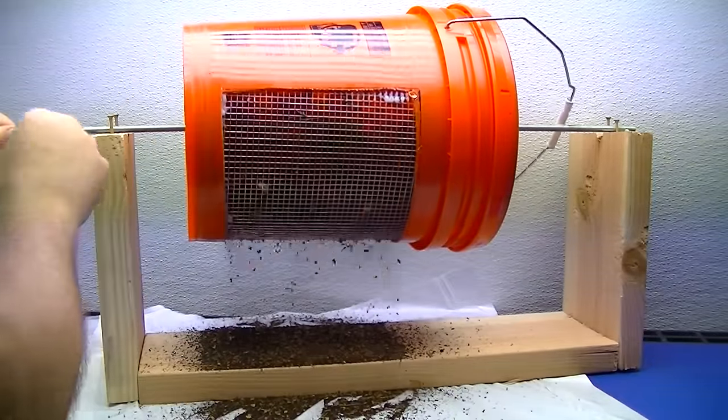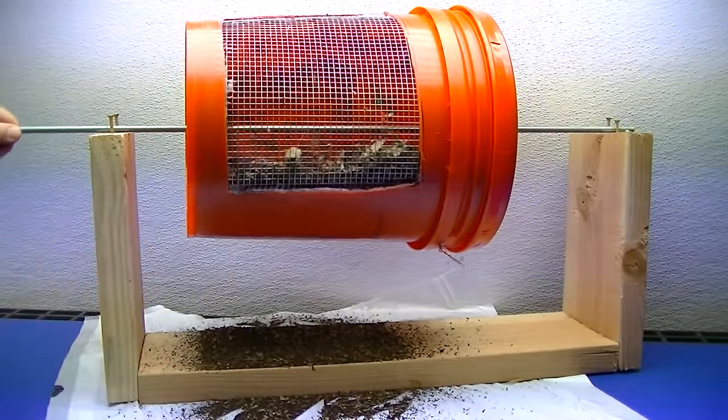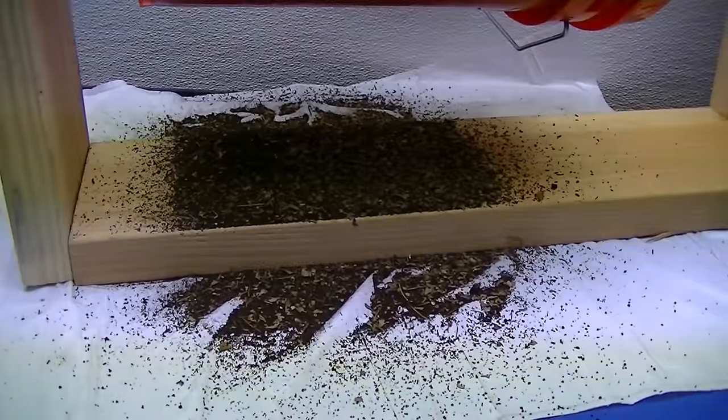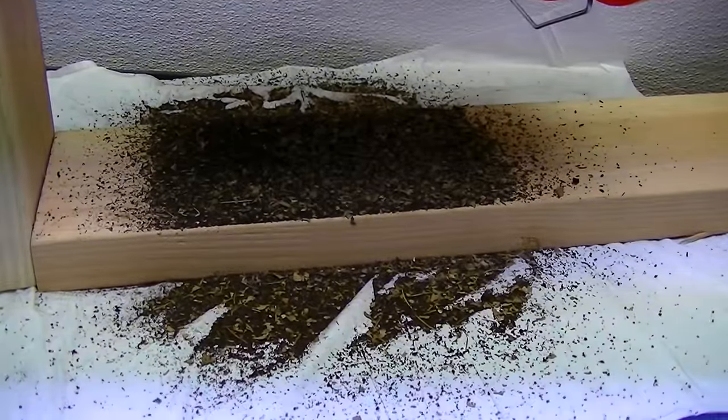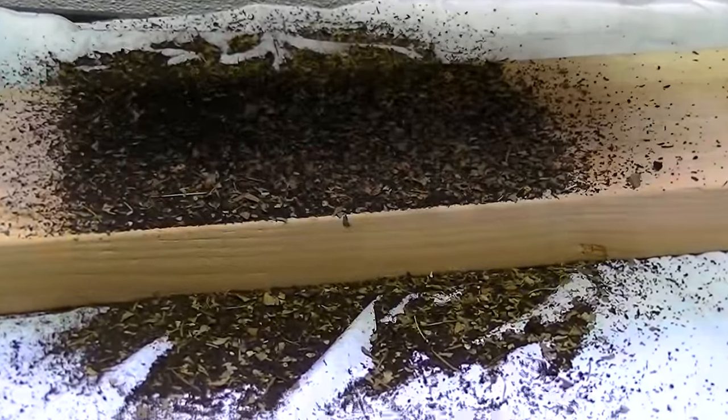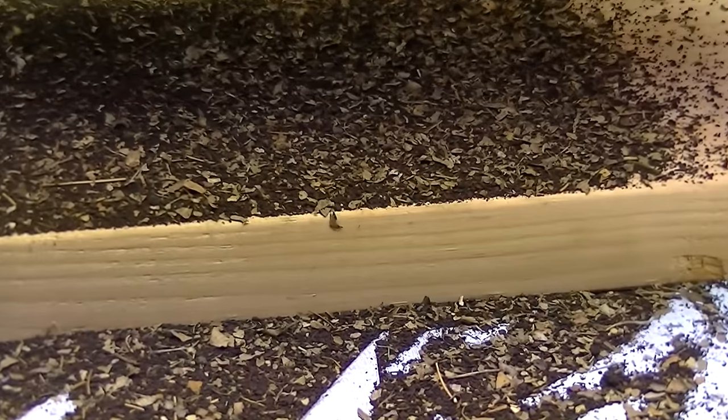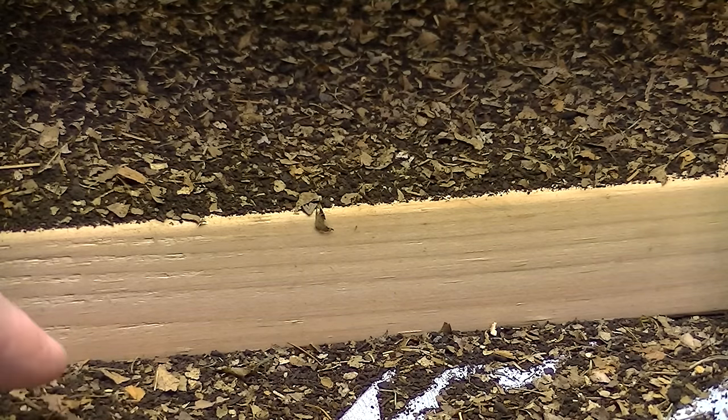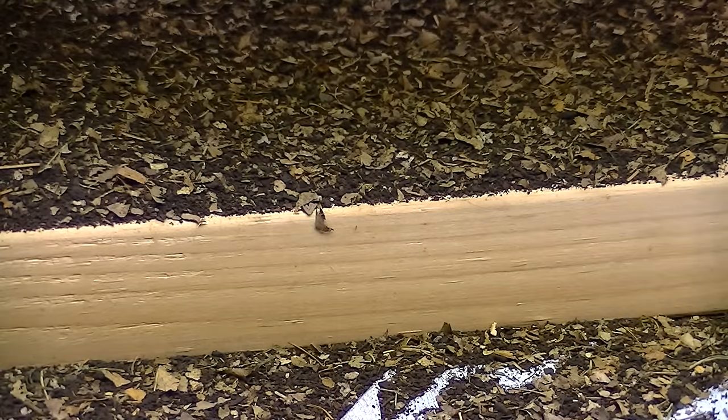So now you have your worm castings. If you're going to use them immediately, you do not have to remove all this other organic material, because remember, you just did a quarter-inch screen. You don't want to store this organic matter, so what you're going to do is separate it one more time, and that's what the one-eighth screen is for.